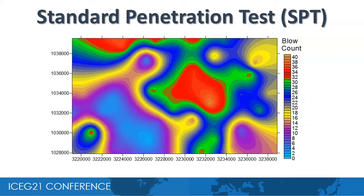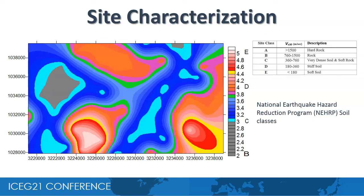Standard Penetration Test is a measure of the loading capacity of ground. It is an in-situ dynamic penetration test which provides information on the geotechnical engineering properties of soil. The color map of standard penetration test shows that the areas having values greater than 25 are suitable for construction works. The National Earthquake Hazard Reduction Program has developed soil classes based on average shear wave velocity of the top 30 meters of soil. Soil class A represents the most stable region while class E represents the most unstable region for civil engineering works. The site characterization map indicates that site classes D and E, highlighted by red color, represent stiff soil and therefore these zones are not suitable for construction works.